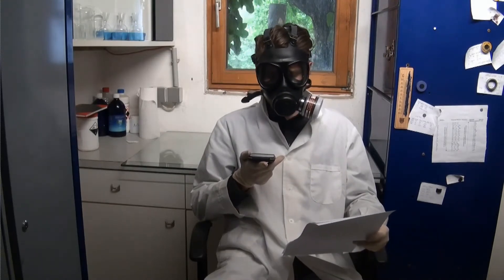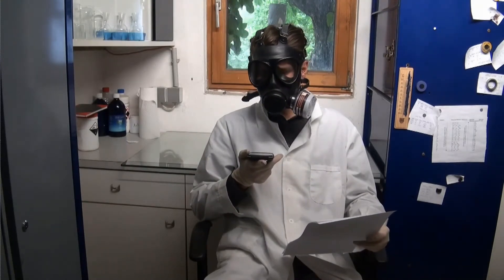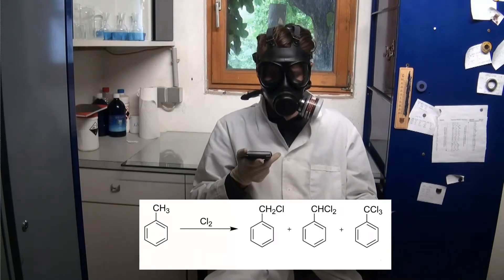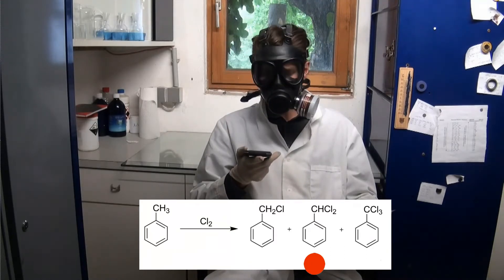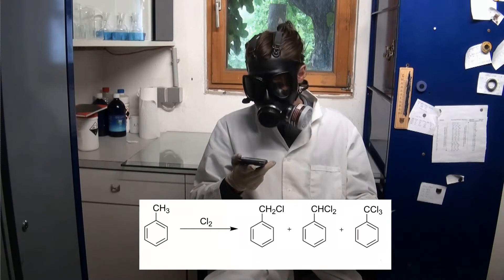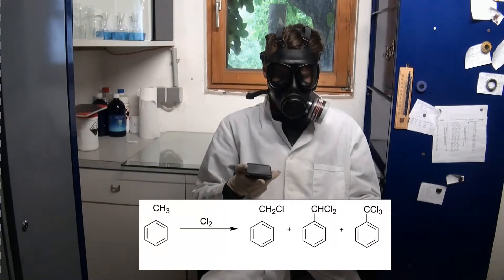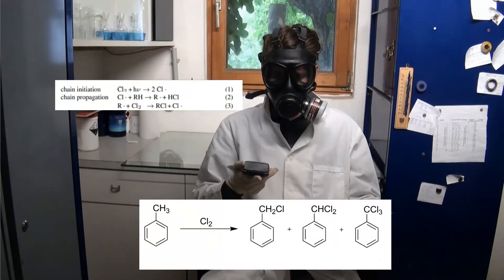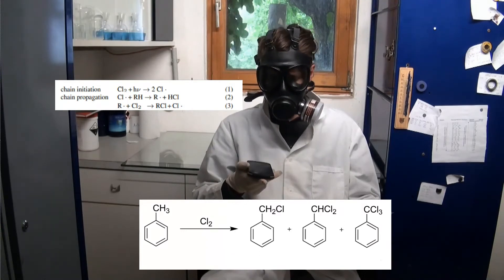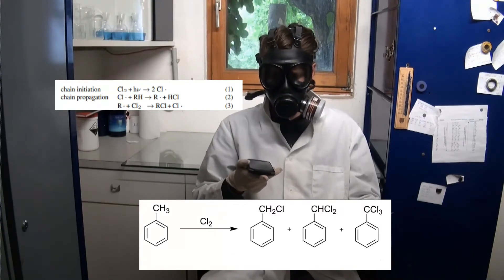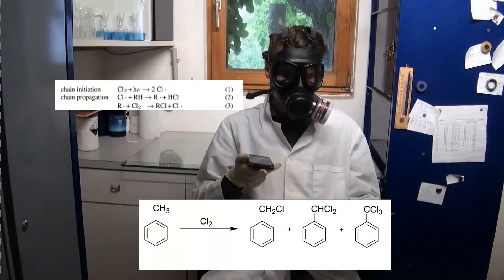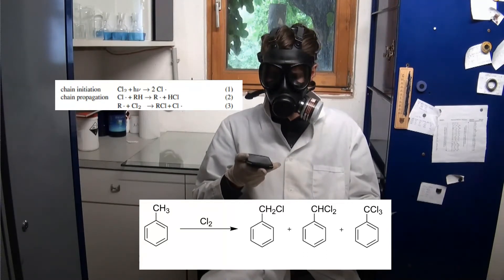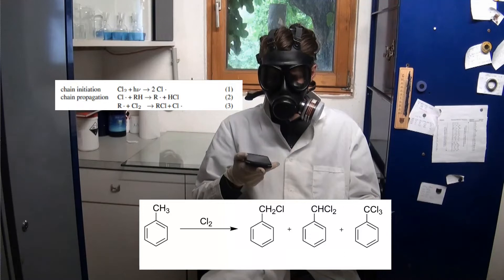In today's video I am going to carry out the photochlorination of toluene in order to produce benzyl chloride, benzal dichloride, and benzotrichloride. In this photochlorination, a UV light source cleaves molecules of chlorine into chlorine radicals. These then substitute the hydrogen on the methyl group of the toluene with chlorine.